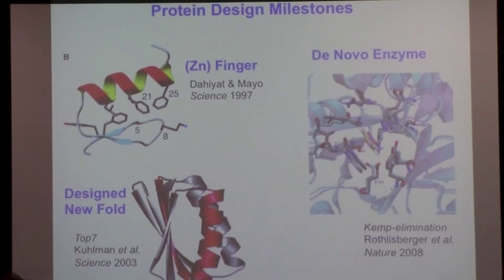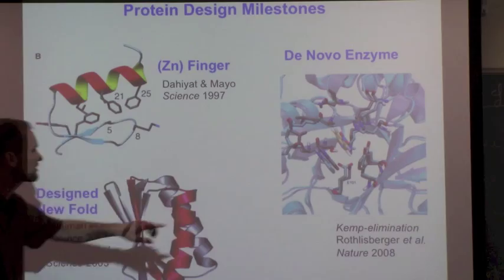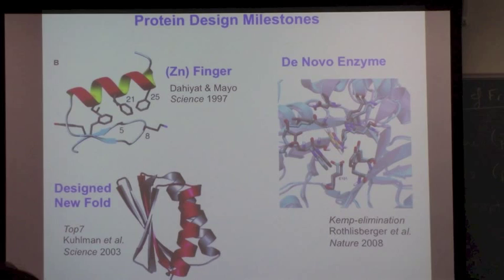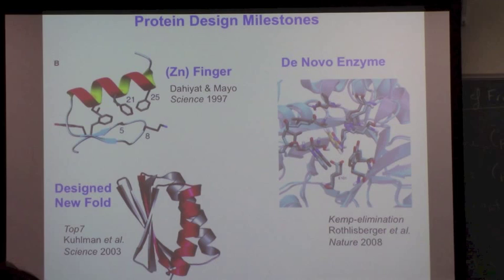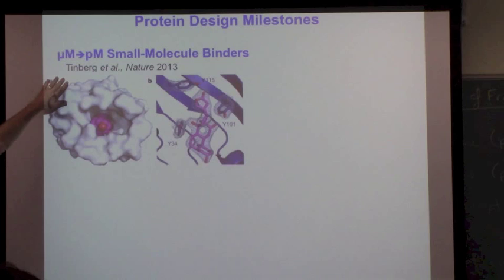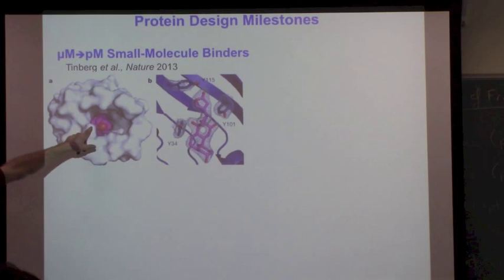The first ab initio designed fold was Brian Kuhlman using Rosetta in David Baker's lab. He literally drew on the back of an envelope a bunch of strands and a helix in shapes that don't occur in nature. Digitized it in the computer, made a sequence and it folded into that shape. That was the very first ab initio completely new fold in 2003, so 10 years ago now. The first enzyme was reported in 2005.